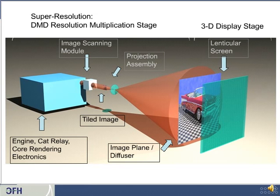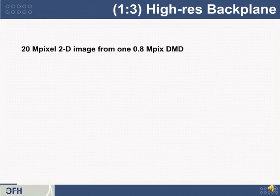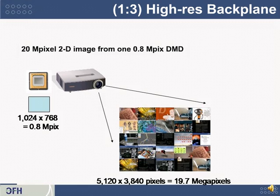So how does this work? First, there's a high-resolution backplane. Back when we were at Actuality Systems, the engineers invented some technology — now owned by Optics for Hire — in which you can create a 20-megapixel two-dimensional image from a 0.8-megapixel projected DMD image. You can also make different multipliers: this one is about 20 or 25x, but you can also make a 4x multiplication. You start with a single XGA-resolution DMD, and by adding an optical module in front of it and clever software, you can create a 20-megapixel image.